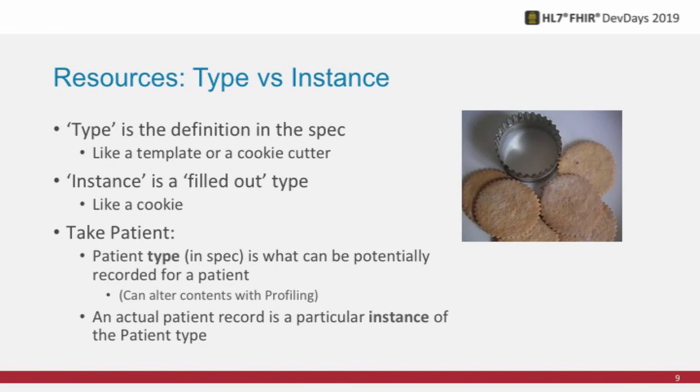I want to touch quickly on the concept of type versus instance, because you'll come across this when talking with techies. The analogy is a cookie cutter. The type is the definition of what something could be; the instance is what it actually is. If you take patient and look in the spec, what you're seeing is the type — the cookie cutter. If you go out and get a resource from a real patient, that's the instance — it's got data filled into it; that's the cookie.